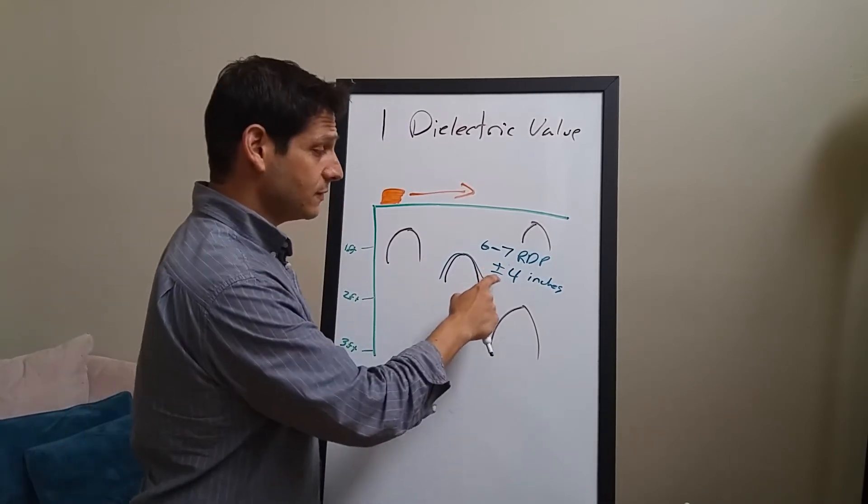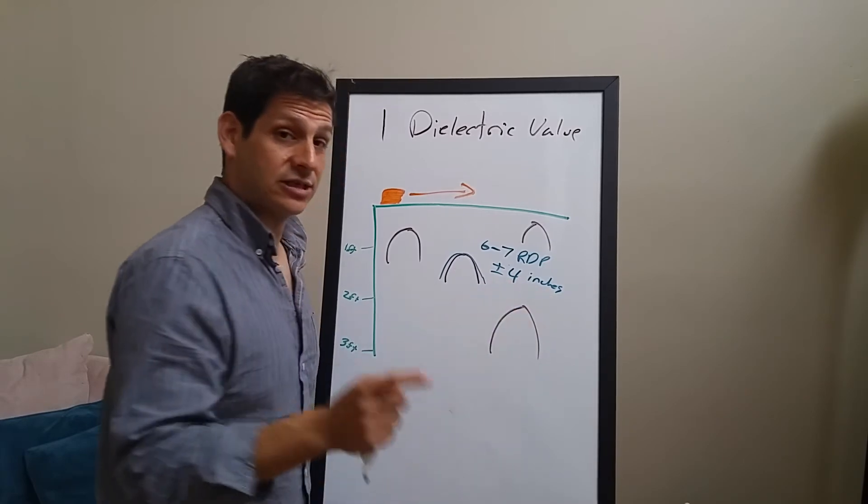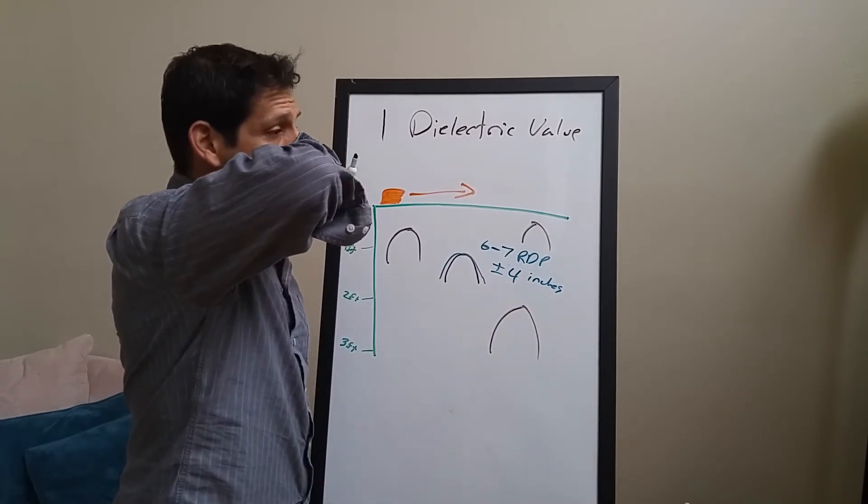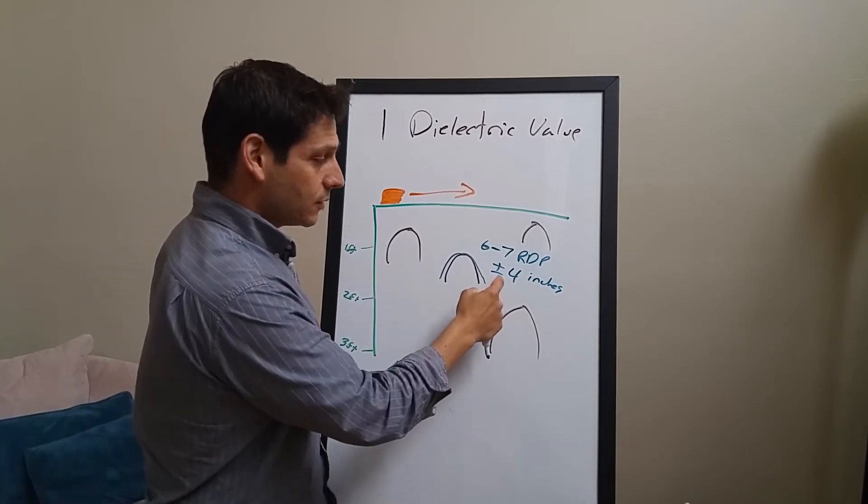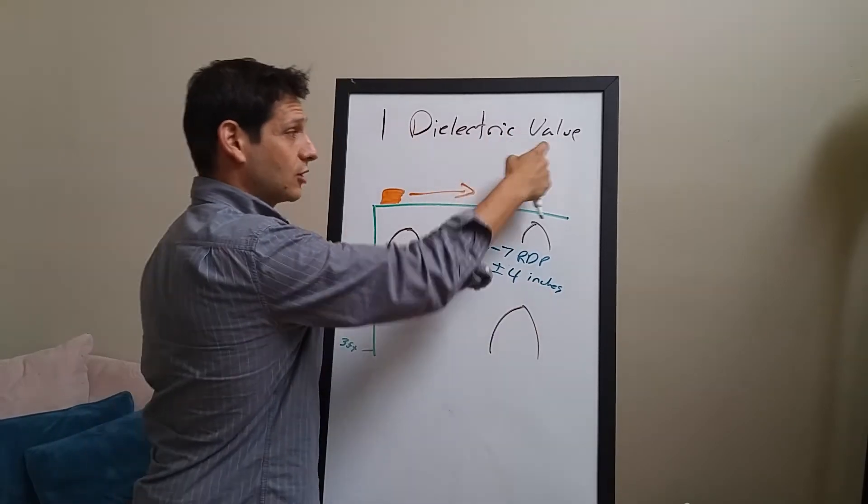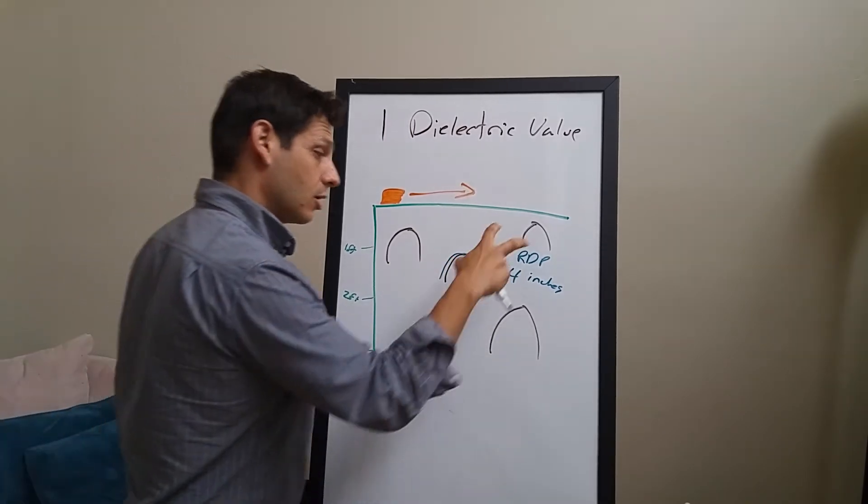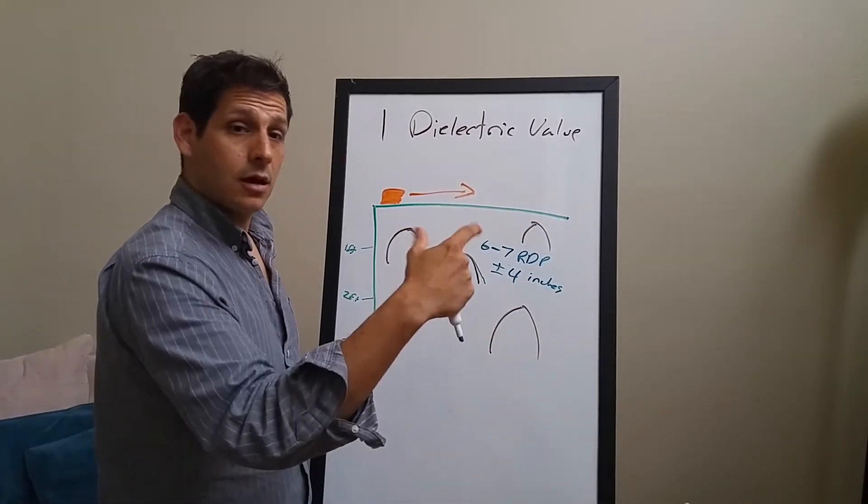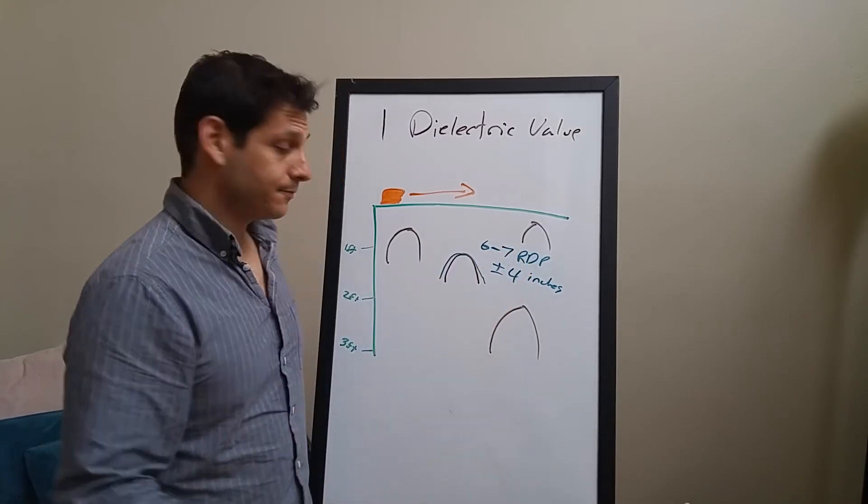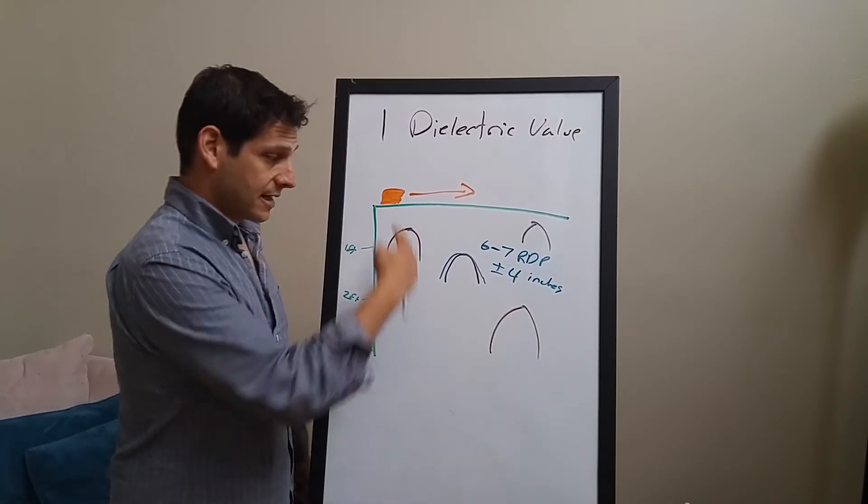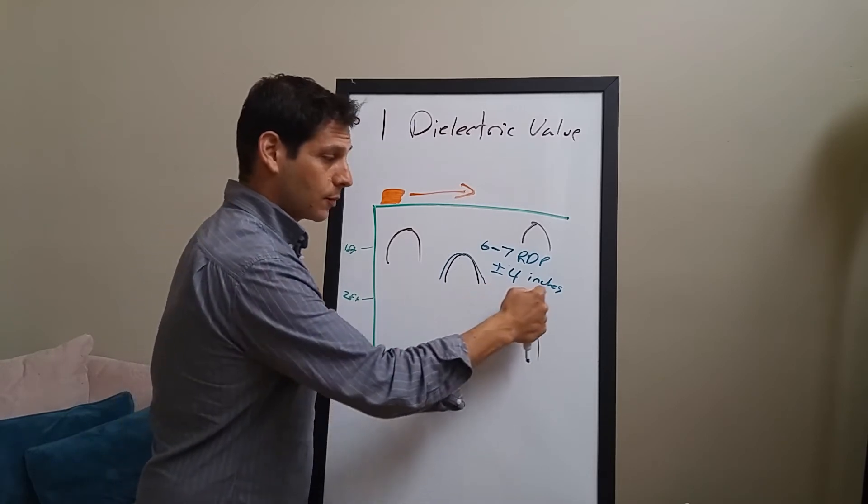Now it doesn't mean that it's going to be plus or minus four inches on every single site. It doesn't mean it's going to be plus or minus four inches on every site for one dielectric value. It may be a little more, it may be a little less. On this site where we were, that was the RDP. Those were the depths that we were identifying targets. And that was our plus minus.